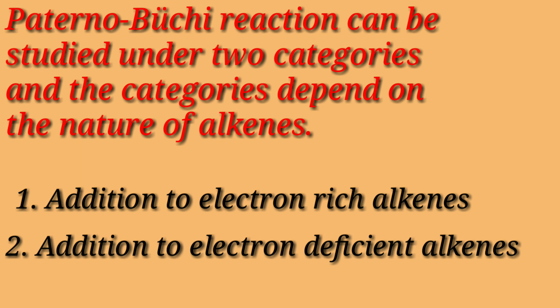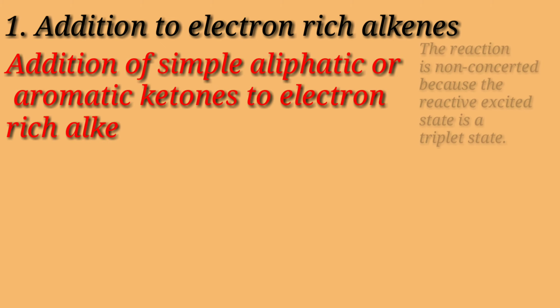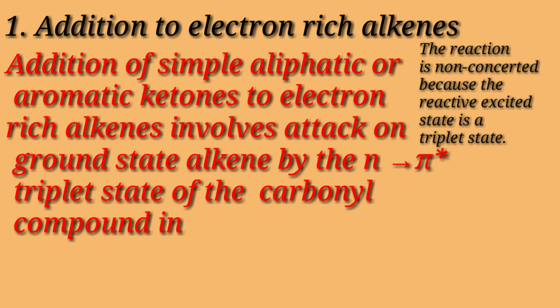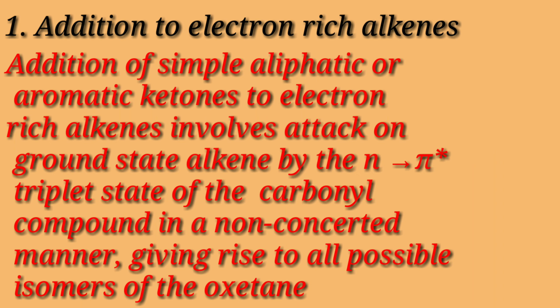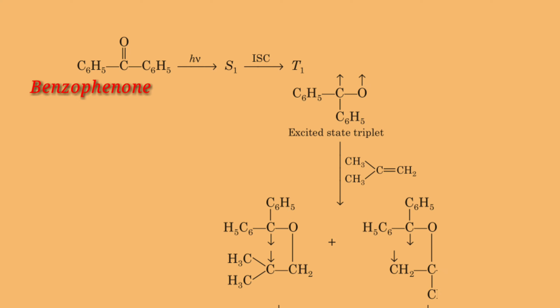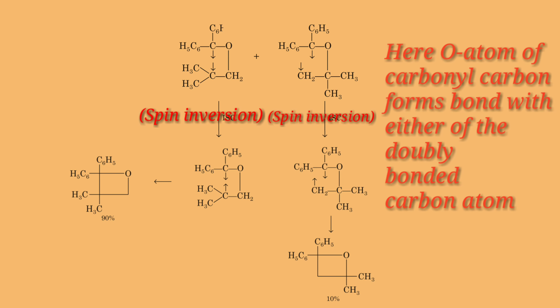The first category is addition to electron-rich alkenes. This involves attack on ground state alkenes by the n→π* triplet state of the carbonyl compound in a non-concerted manner, giving rise to all possible isomers of the oxetane. Here, the carbonyl compound, i.e. benzophenone in its triplet state, adds through its oxygen atom to the alkene, i.e. isobutene, to give the more stable diradical. In the next step, spin inversion occurs and then a bond is formed to give the oxetane.